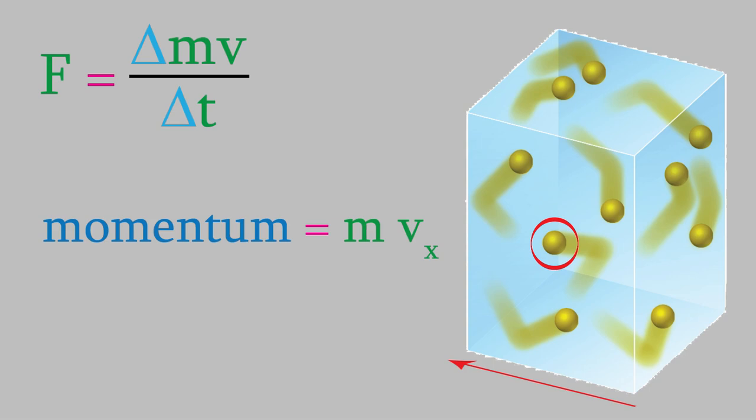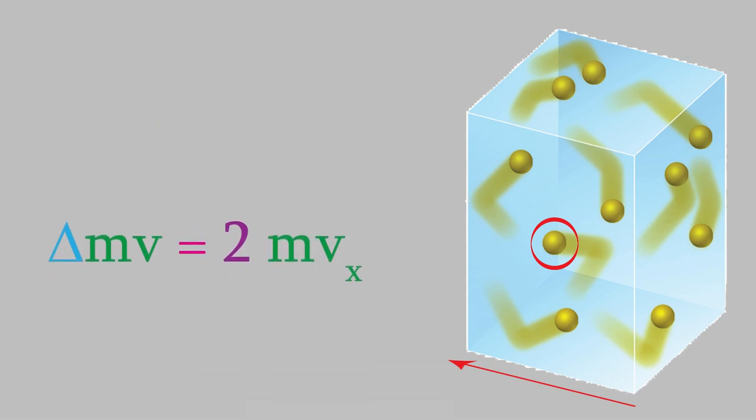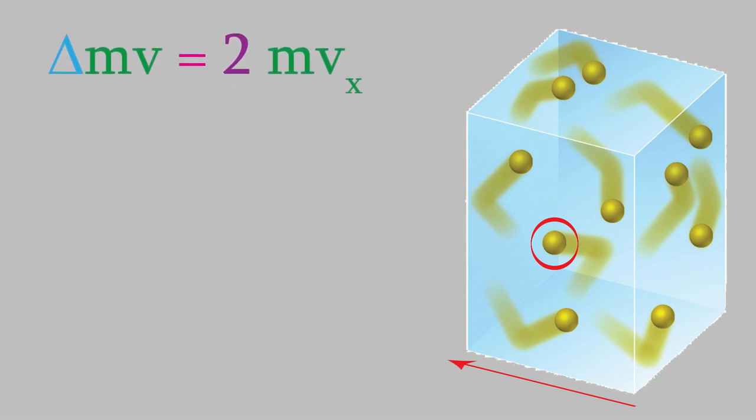When the particle eventually hits the wall of the box, it bounces off in an elastic collision, which means it's now traveling with the same speed but in the opposite direction. That means the change in momentum is 2 times mvx. Now, the pressure exerted by a gas depends on how often the particles hit the walls of the container. So, how long does it take for a particle to hit the wall, then travel the distance across the box and back again so that it hits the wall a second time?